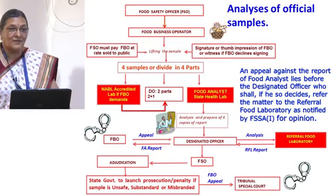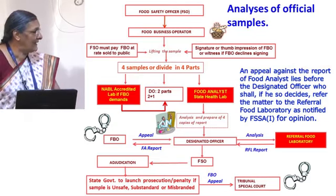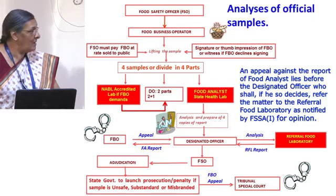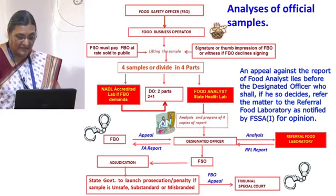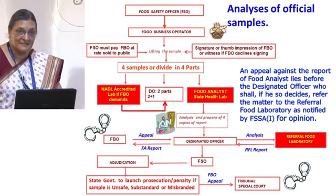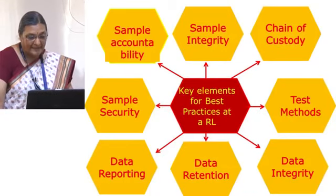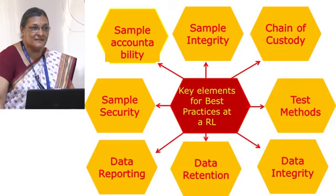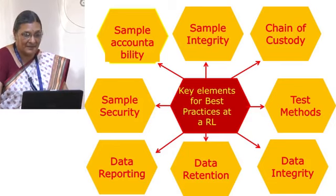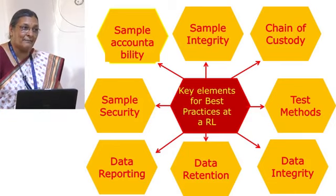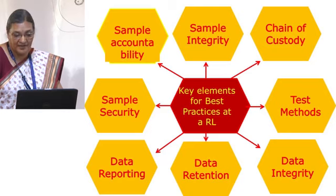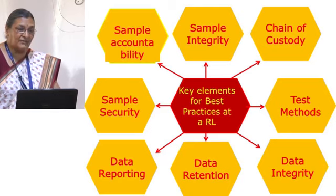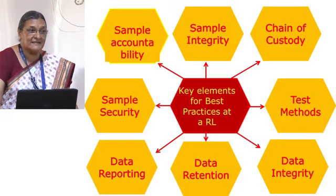The key elements for best practices in a regulatory laboratory are: first, sample security; second, sample accountability — tracking the sample from arrival through analysis to disposal; third, sample integrity — no cross-contamination, no deliberate adding or removing of anything, with integrity maintained as at arrival; and fourth, the chain of custody — at every point in time, responsibility for the sample must be documented, from the sample custodian to the laboratory to waste disposal.